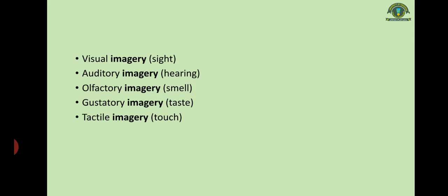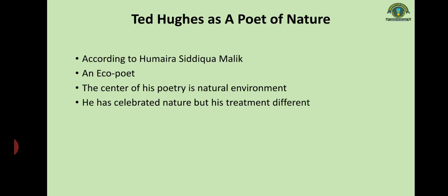Hughes is mainly focused on visual imagery, auditory imagery, olfactory imagery, gustatory imagery, and tactile imagery — imagery related to the five senses. When they work together in a subtle manner, a whole new being is created in the form of a poem, mainly being a poem about nature. We now move to the main topic of the lecture: Ted Hughes as a poet of nature.